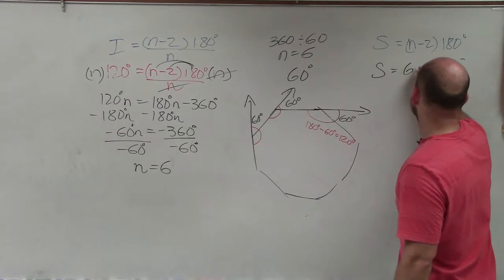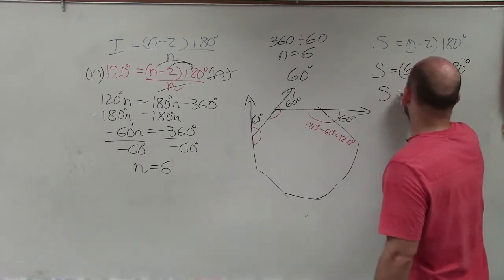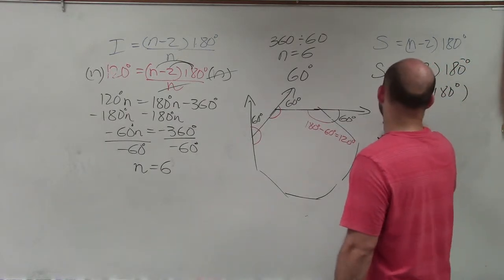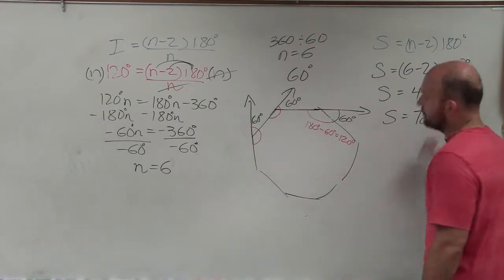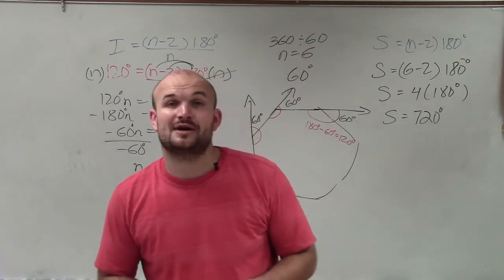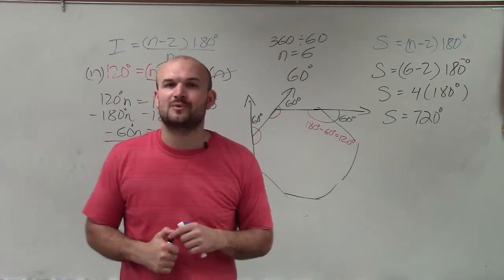So now we have S equals 6 minus 2 times 180 degrees. S equals 4 times 180 degrees. S equals 720. Therefore, ladies and gentlemen, when you have a regular polygon with one exterior angle at 60 degrees, the sum of the interior angles will be 720. Thanks.